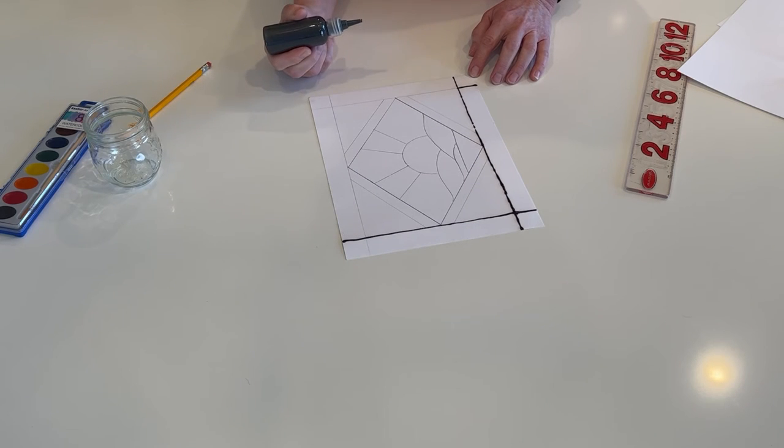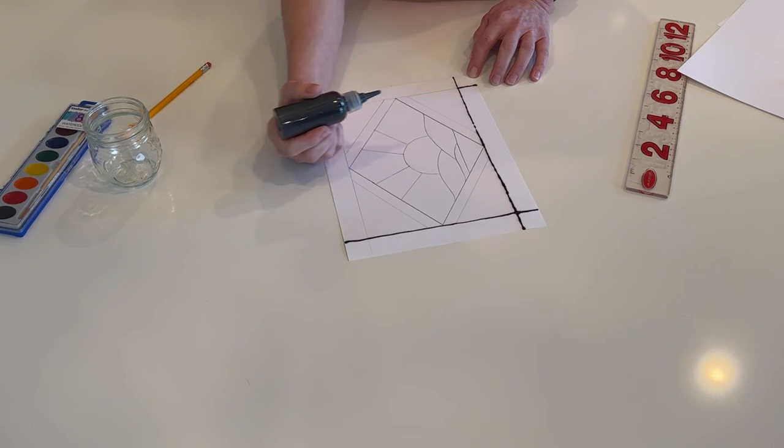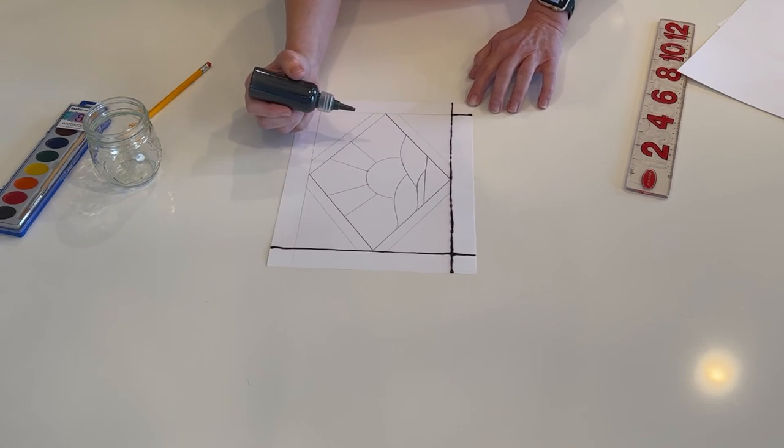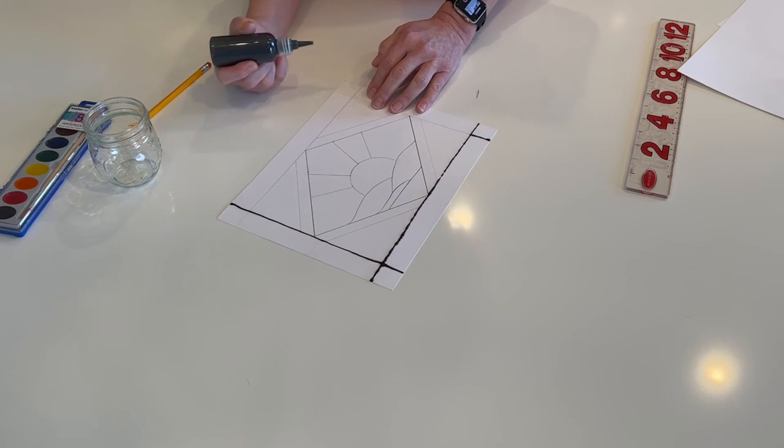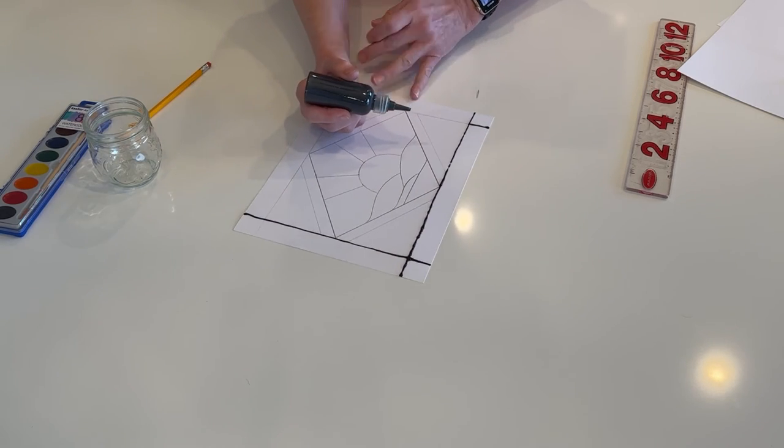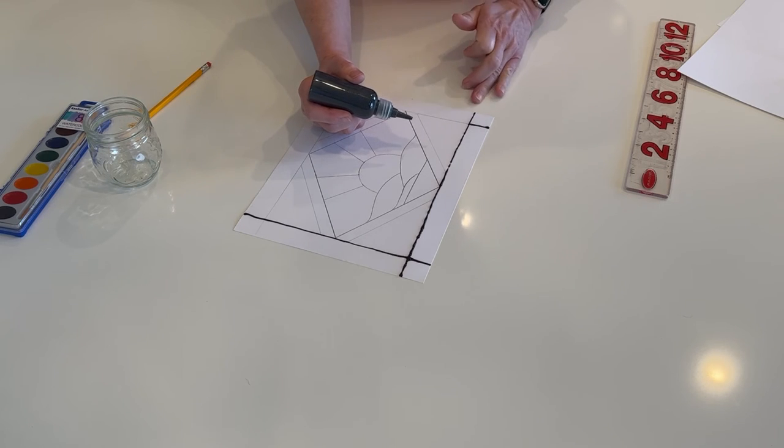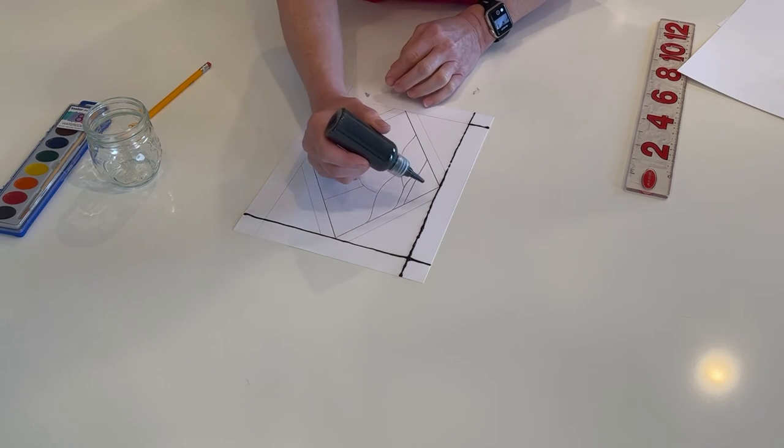So with that let's get started. Something else important to remember is that if I go ahead and outline all of this my hand is going to run into it when I move over here. So what you need to do is kind of work from one side to the other so that you're not going to be rubbing your hand through your glue. Either that or work in stages so that you can let it dry and then come back.